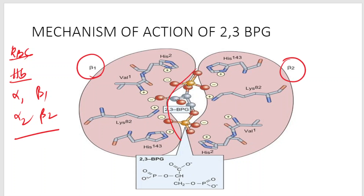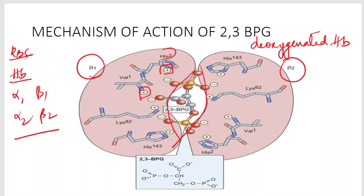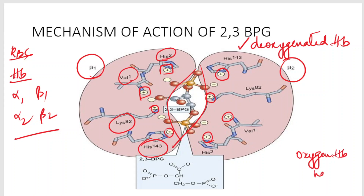In deoxygenated hemoglobin, the beta-1 and beta-2 chains form a shallow cleft between them. This cleft is formed by cationic sites of specific amino acids: histidine-2, valine-1, lysine-82, and histidine-143 — present in both beta chains. In oxygenated hemoglobin, however, this cleft becomes very narrow and the cationic sites are not as prominent.